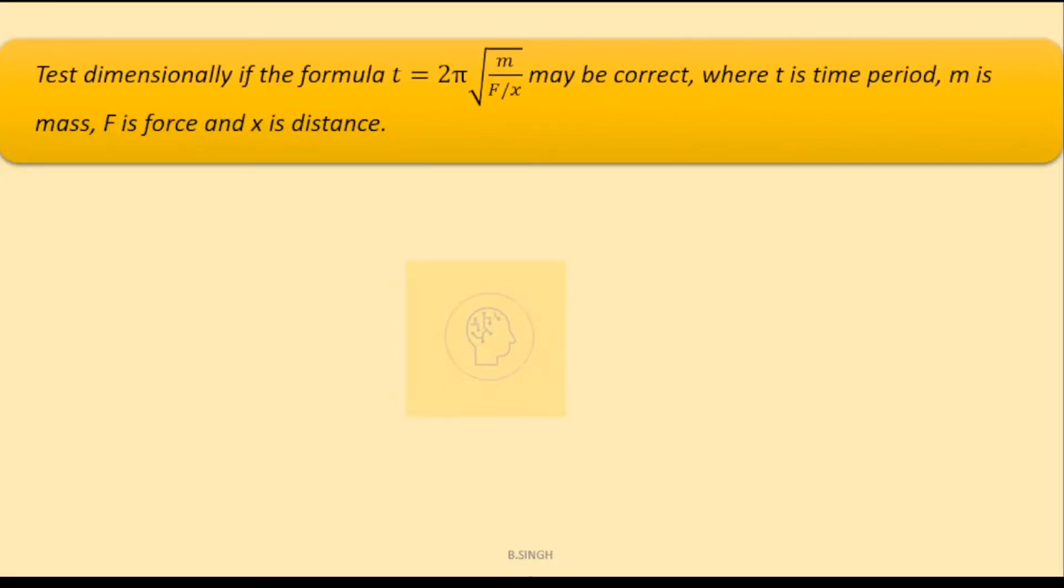The problem says test dimensionally if the formula t equals 2π root under m upon f by x may be correct, where t is the time period, m is the mass, f is the force, and x is the distance.